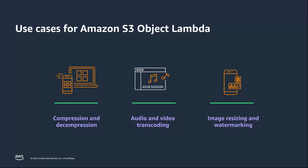You can use an S3 Object Lambda access point alias as an origin for your Amazon CloudFront distribution — the possibilities are endless. You can use this to implement automatic image resizing or to tag or annotate content as it is downloaded. Many images still use older formats like JPEG or PNG, and you can use a transcoding function to deliver images in more efficient formats like WebP, BPG, or HEIC. Digital images contain metadata, and you can implement a function that strips metadata to help satisfy data privacy requirements.